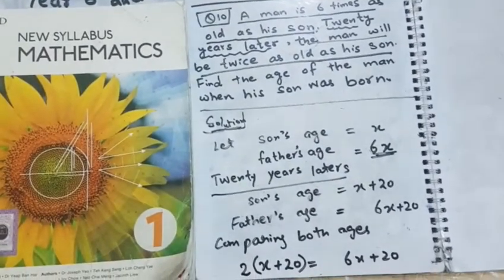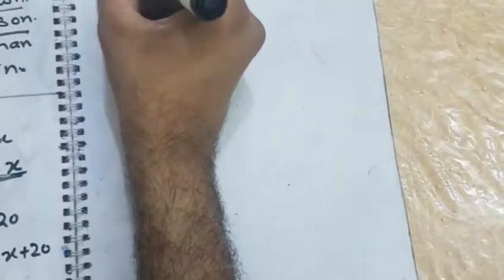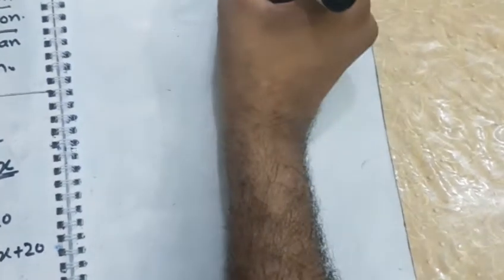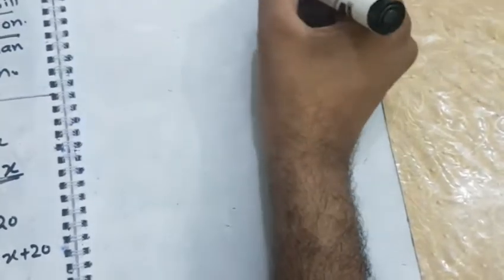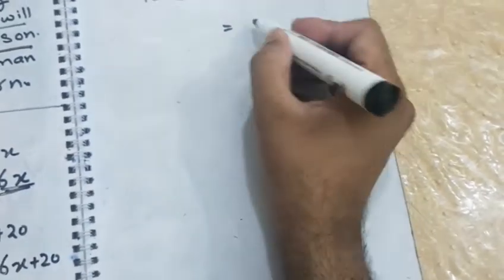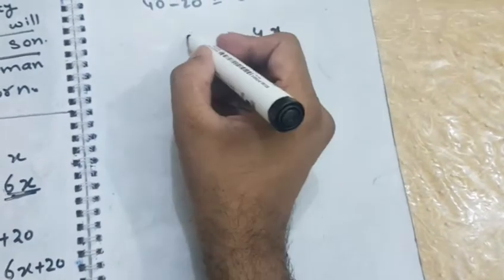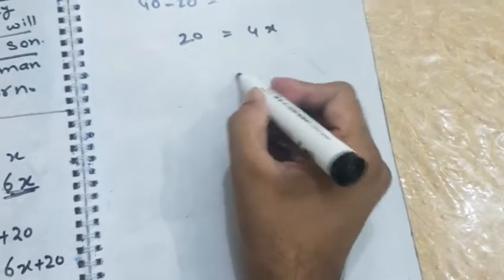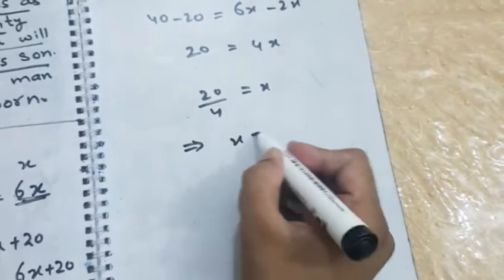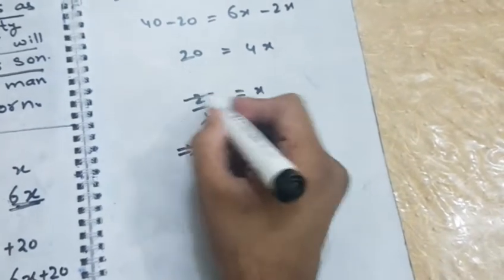अब simply इसको simplify कर लेंगे. 2x plus 2 times 20 will be 40 is equal to 6x plus 20. 6x और 2x उदर जाके minus 2x 40 20 इदर आके minus 20. 6x मैंसे 2x निकालेंगे तो 4x 40 मैंसे 20 निकालेंगे तो 20 इदर आ जाएगा. और 20 will be divided by 4. This implies x is equal to 5. क्योंके 4 5 times होता है.